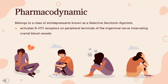Pharmacodynamics. Narotriptin is a selective agonist of serotonin (5-hydroxytryptamine, 5-HT) type 1B and 1D receptors. It is structurally and pharmacologically related to other selective 5-HT1B/1D receptor agonists.